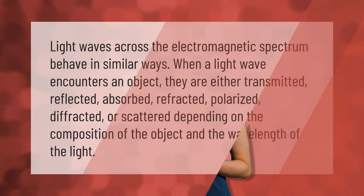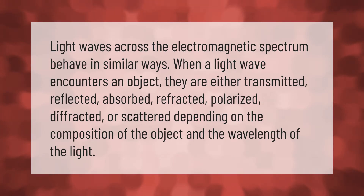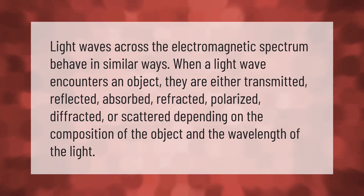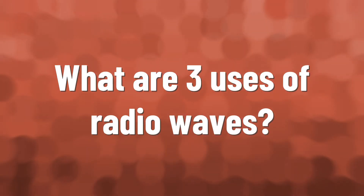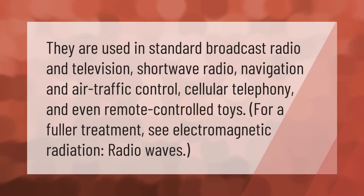Light waves across the electromagnetic spectrum behave in similar ways. When a light wave encounters an object, they are either transmitted, reflected, absorbed, refracted, polarized, diffracted, or scattered, depending on the composition of the object and the wavelength of the light.